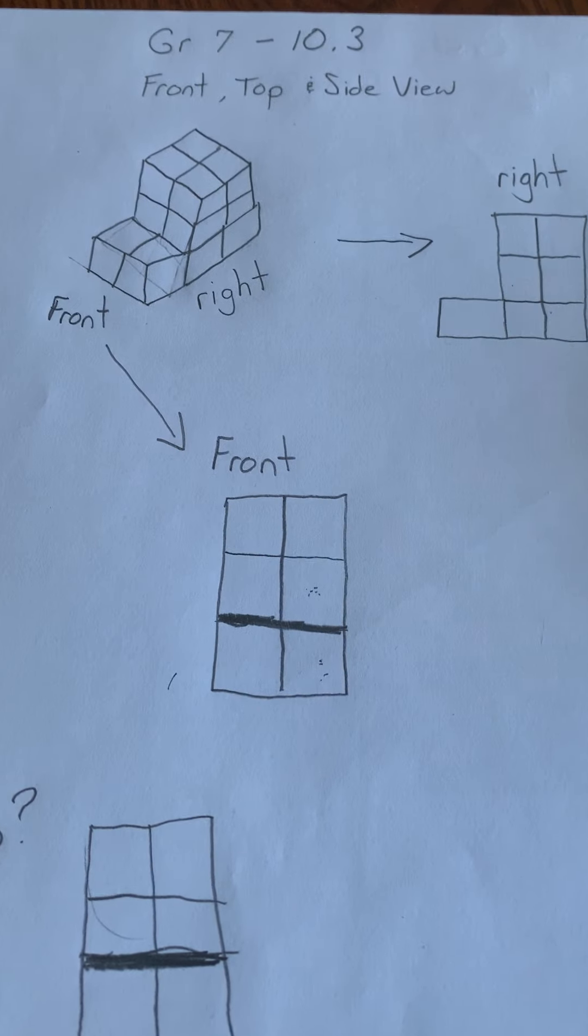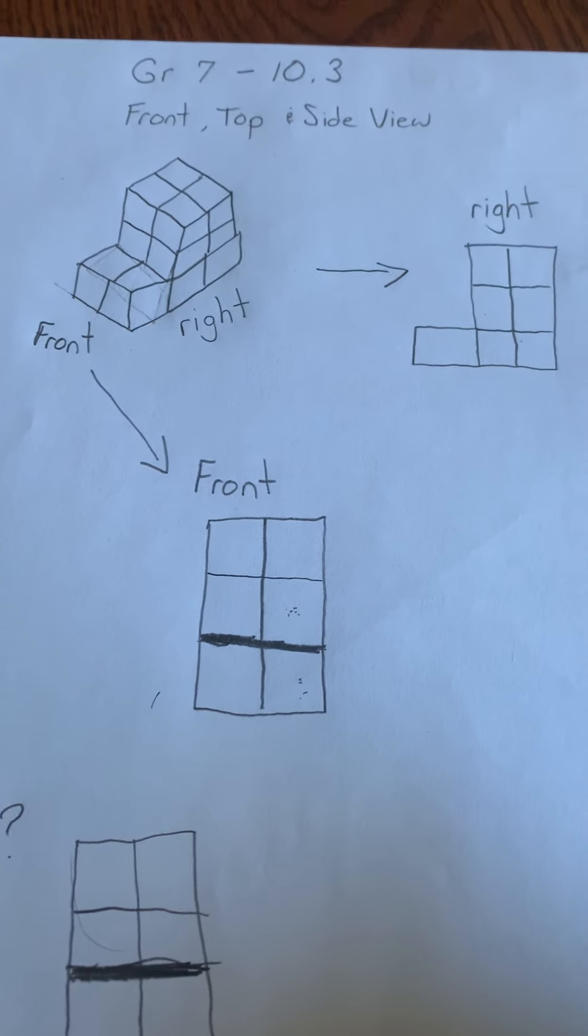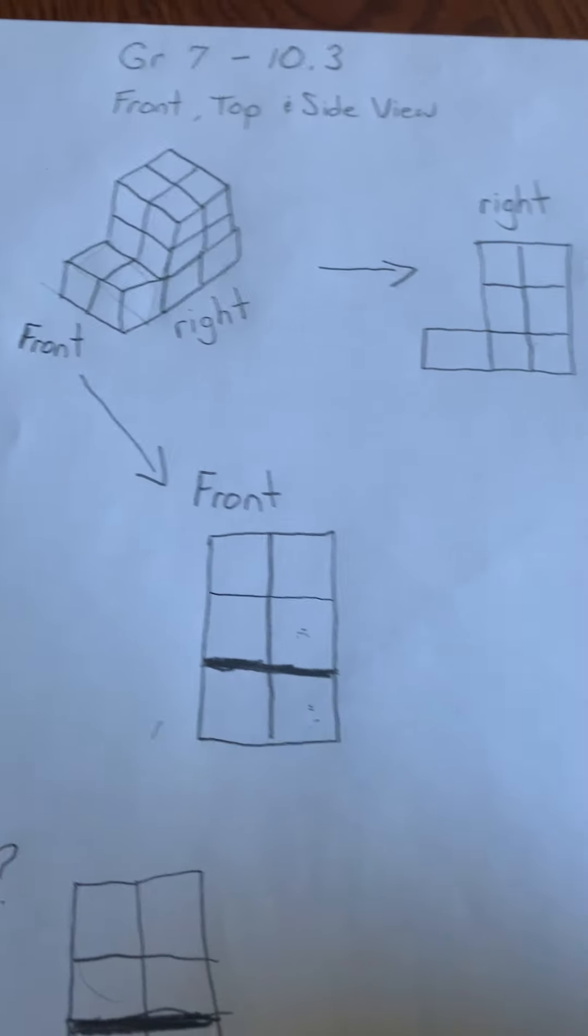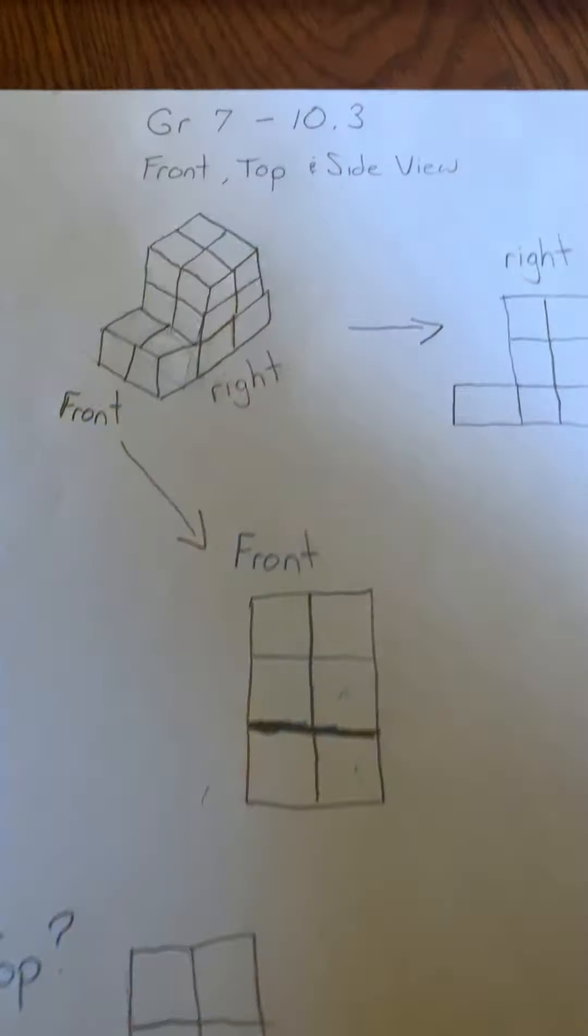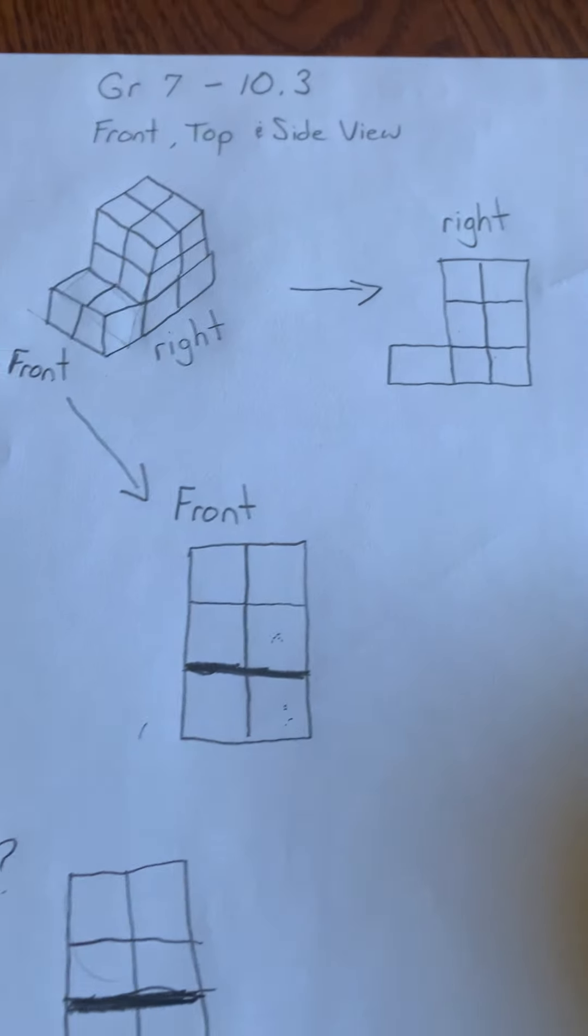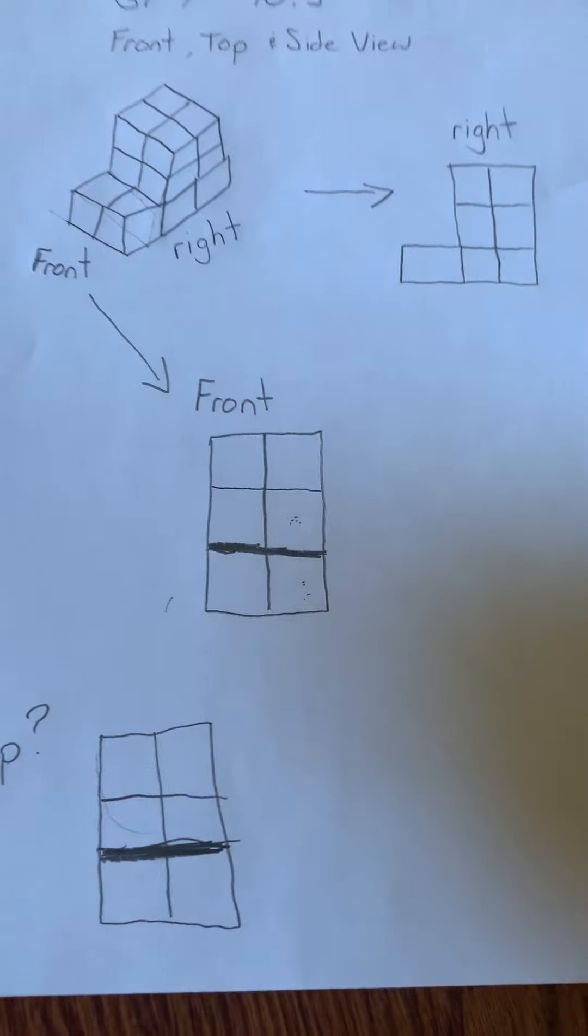So today's math for grade sevens is basically doing a bunch of these front, top, right, left kind of views. May or may not be handy to have some Lego. The drawings are good enough for some people. It really depends on how good you are visual spatially.